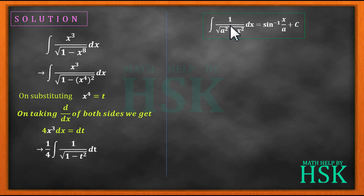Now we know that integration of 1 upon square root of a squared minus x squared dx is equal to sin inverse of x upon a plus c. So integration of 1 upon this can be considered as square root of 1 squared minus t squared, so this will be equal to 1 by 4 times, that is 1 by 4 written outside the integral,